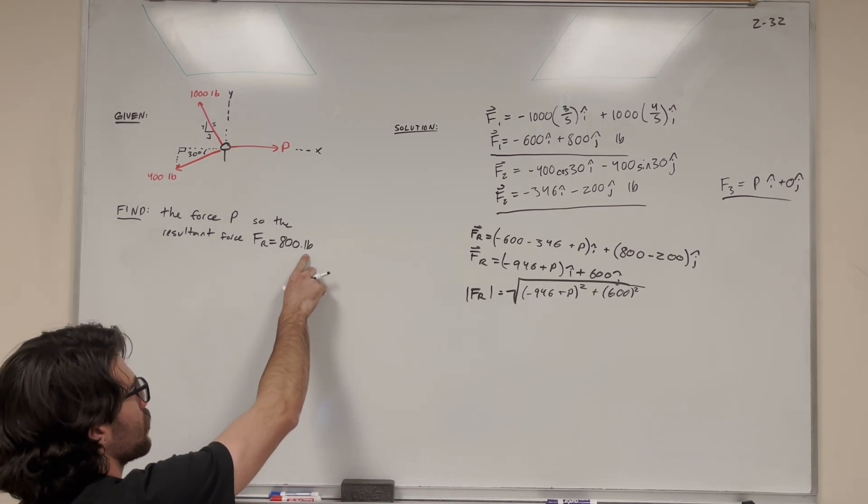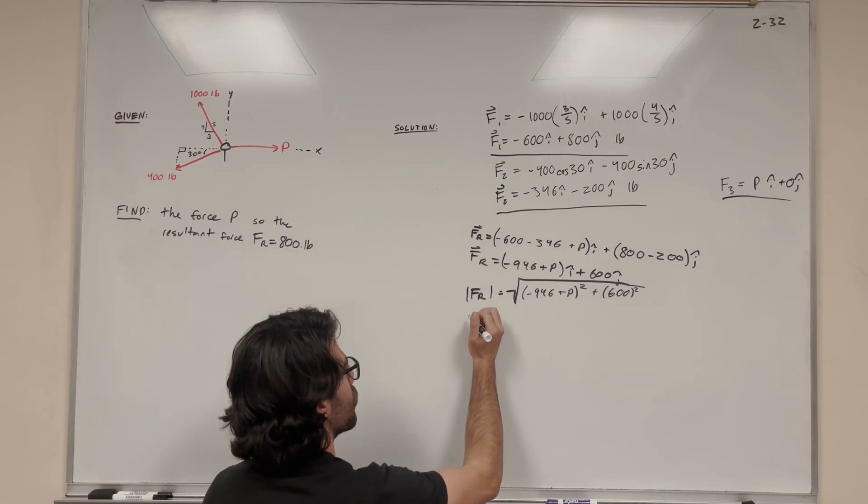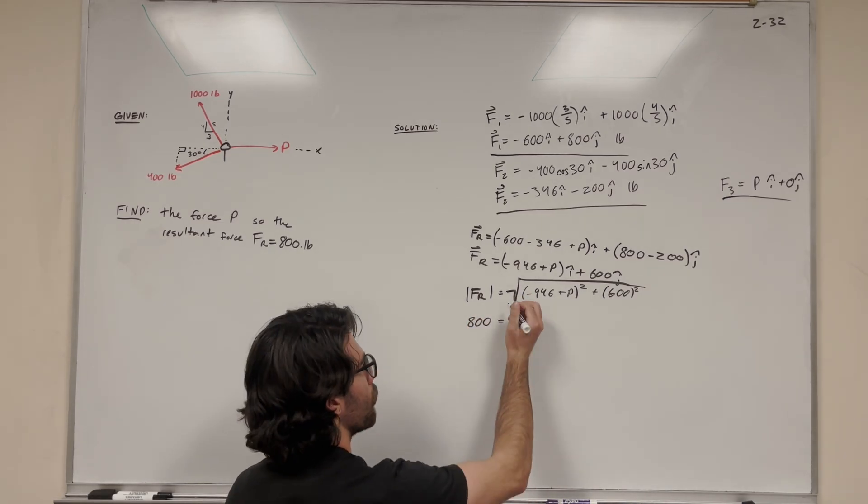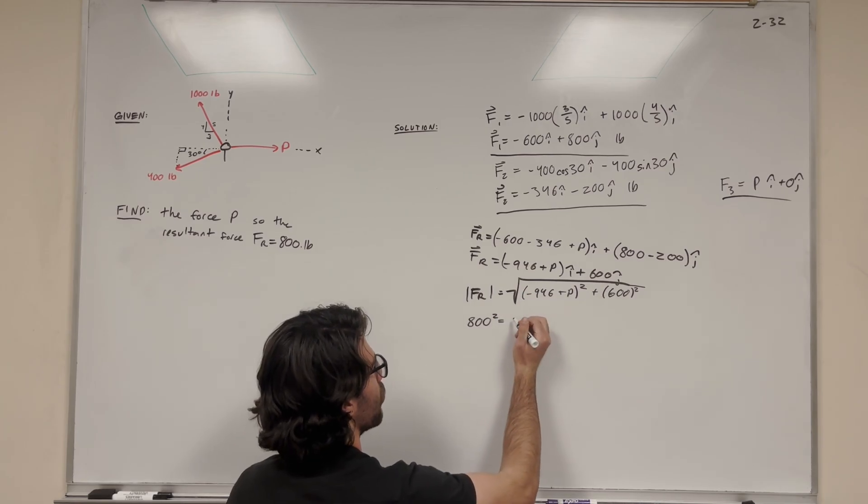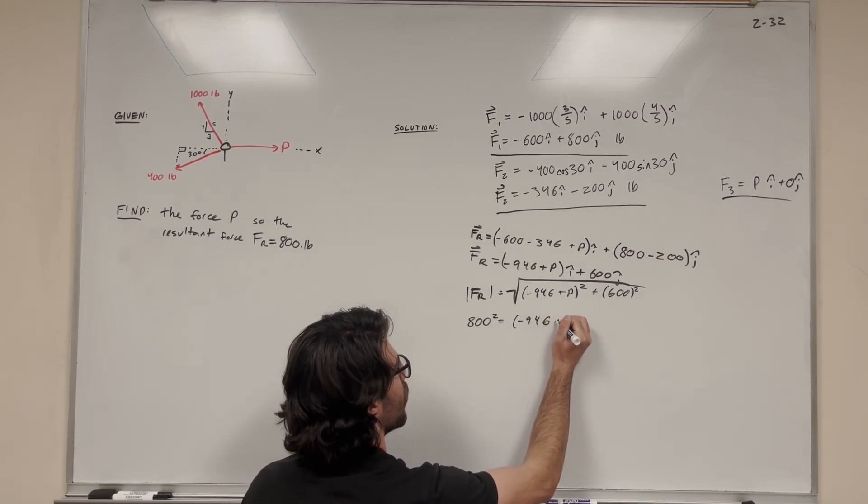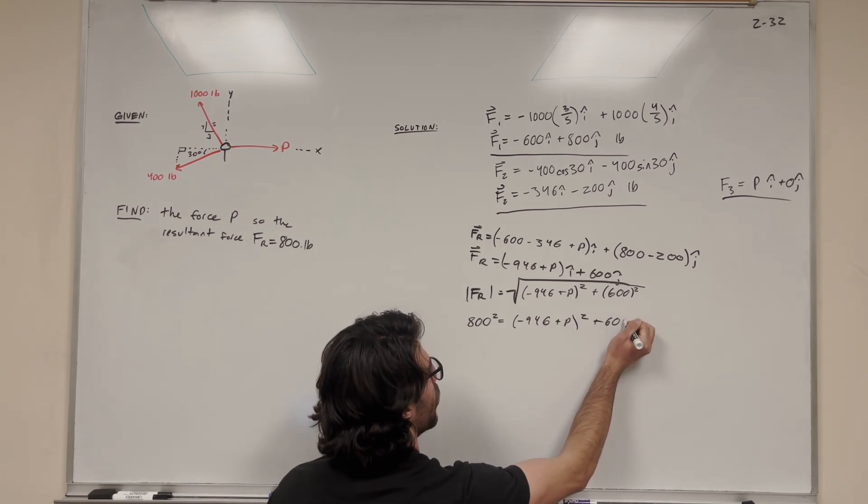But we want force resultant to be 800 pounds, so let's set 800 equal to all of this. Now let's square both sides to get rid of the square root to get negative 946 plus p squared plus 600 squared.